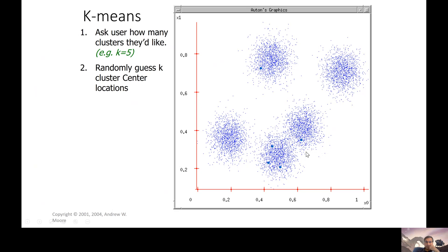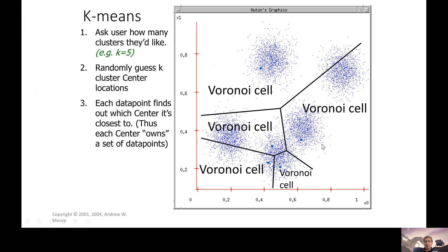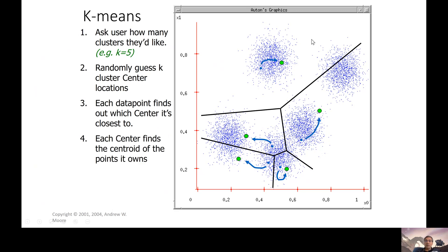You can simply select five random data points and define them as candidate centers of future clusters. Then you decompose your data space into Voronoi cells. For each candidate center, you define its corresponding Voronoi cell. Then, for all points contained in each Voronoi cell, you compute the mean value — the mean point conditioned on that Voronoi cell. You then move your initial candidate cluster centers to these new mean positions.